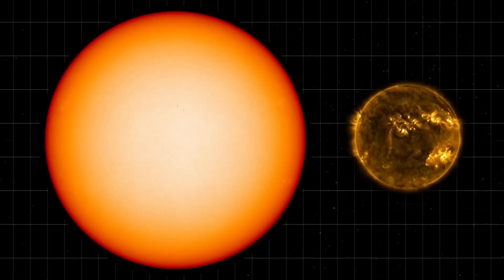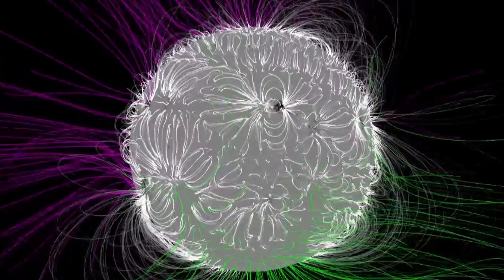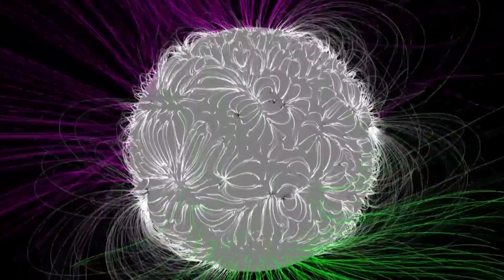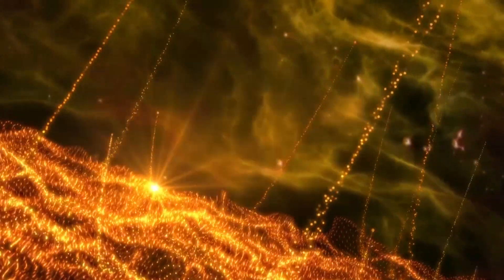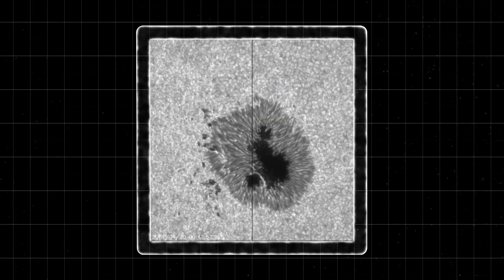Solar flares are massive explosions on the sun's surface, releasing a tremendous amount of energy in the form of light, heat, and radiation. These flares can be so intense that they disrupt communications and navigation systems on Earth, particularly causing radio blackouts.